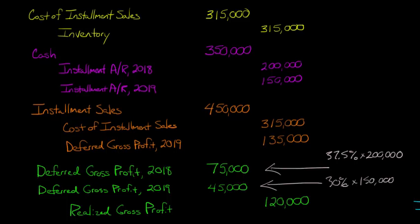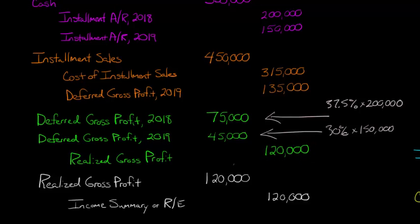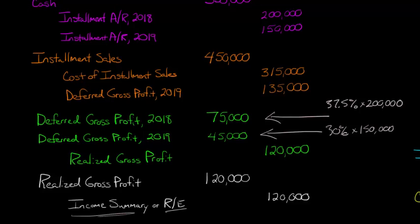We've got two different periods — we're just trying to keep it straight. Finally, we make our closing entry: we debit realized gross profit for $120,000 to zero it out, and credit either income summary or retained earnings directly for $120,000.